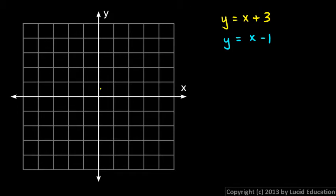This first one, y equals x plus 3, has a y-intercept of 3 and a slope of 1, so we can draw this graph in.